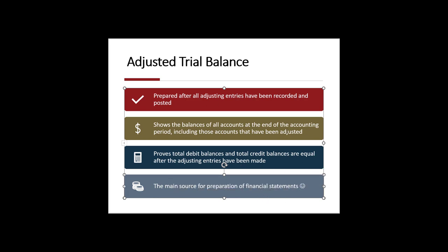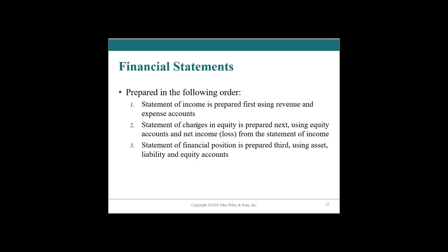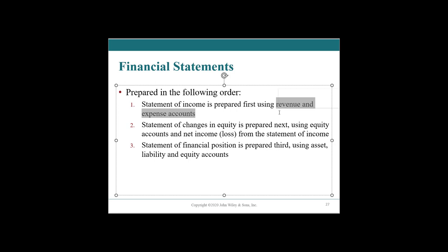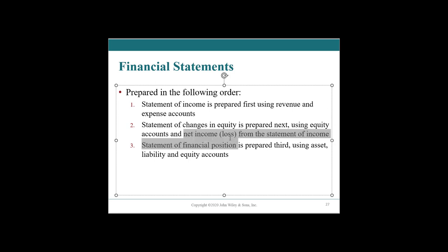Once you finalize this, you have your financial statements, then you send them out to your users and you are done. Financial statements are prepared in the same order as covered in earlier chapters. First, we do our income statement — our revenues and expense accounts. Then our statement of changes in equity, where we look at our net income, then our dividends.